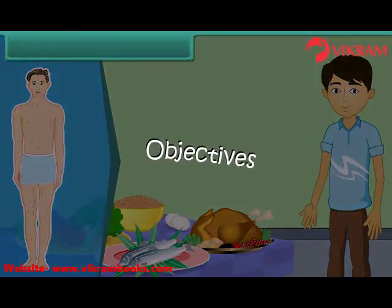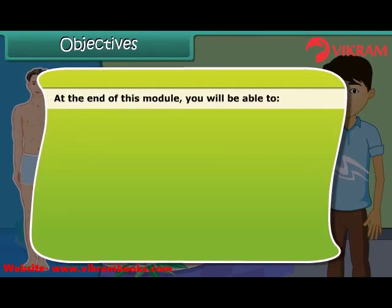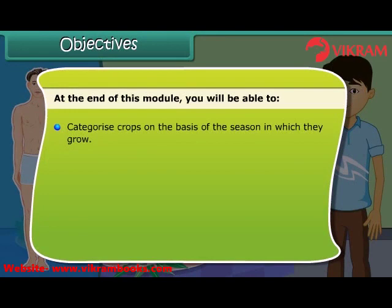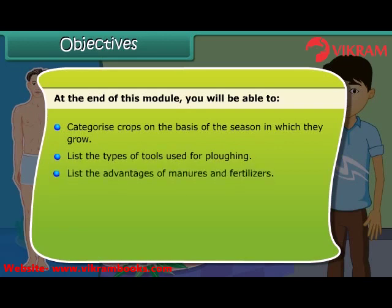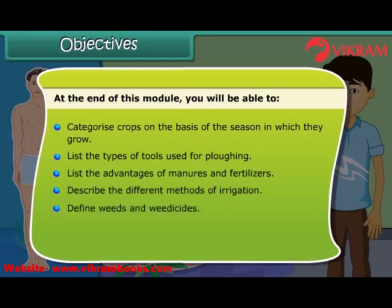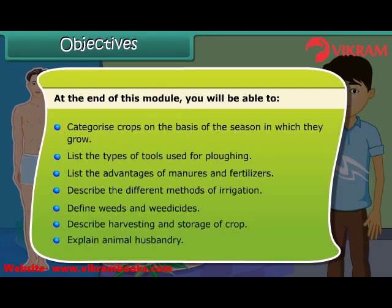Objectives. At the end of this module, you will be able to: categorize crops on the basis of seasons in which they grow; list the types of tools used for plowing; list the advantages of manure and fertilizers; describe the different methods of irrigation; define weeds and weedicides; describe harvesting and storage of crops; and explain animal husbandry.